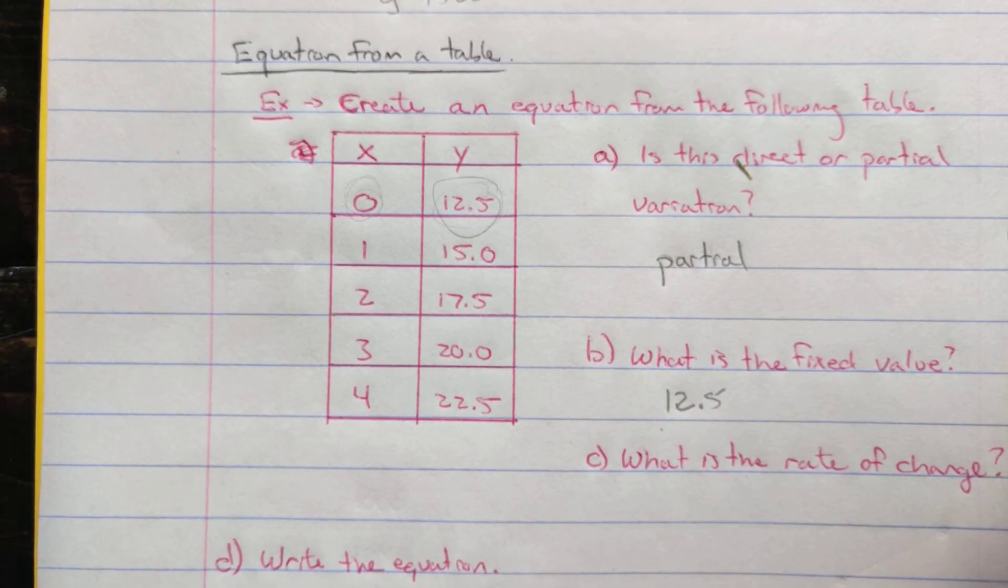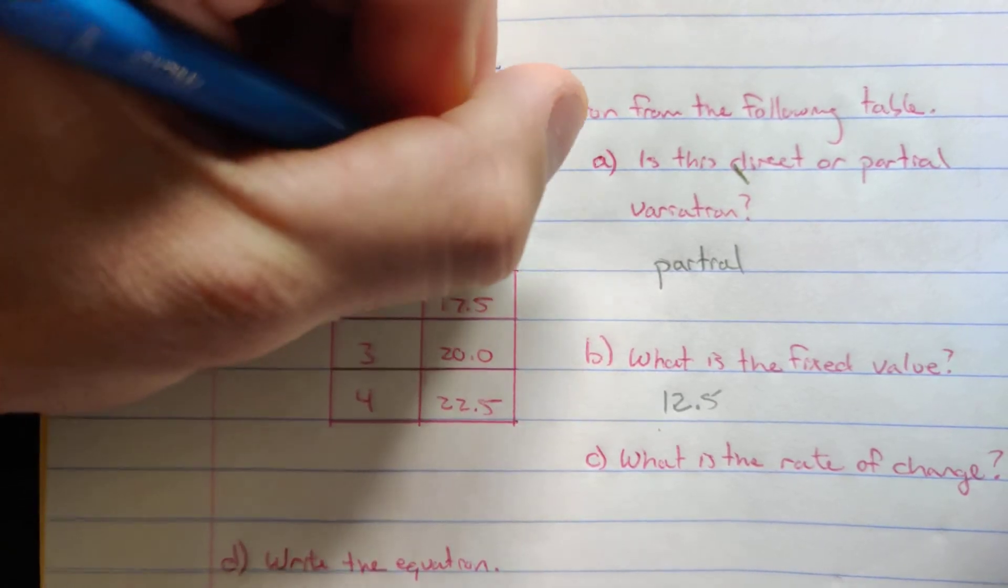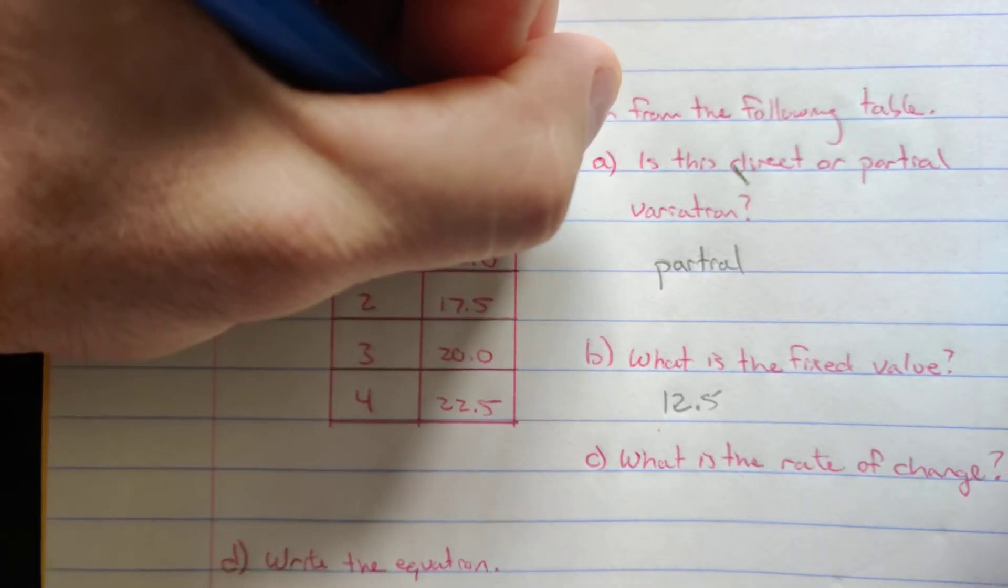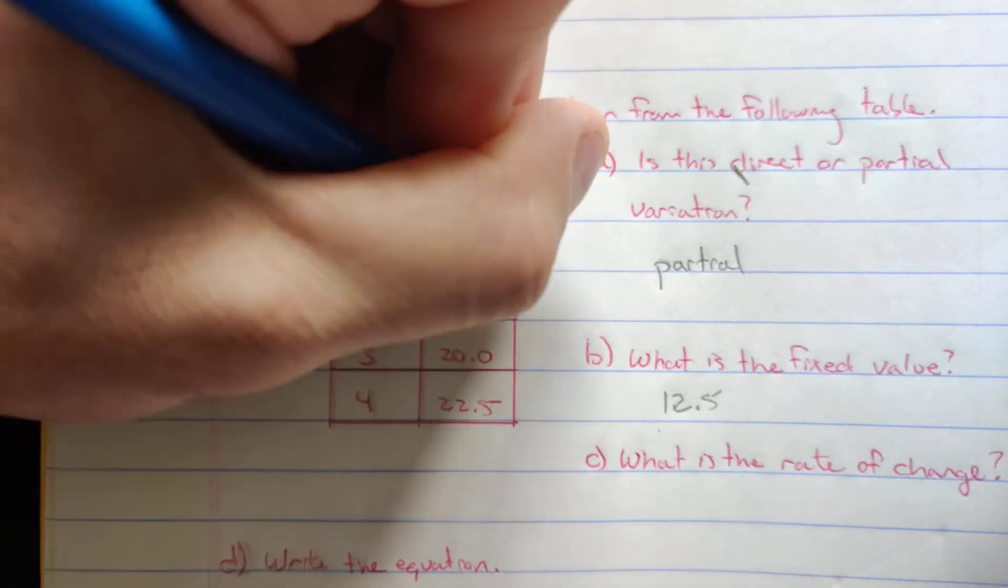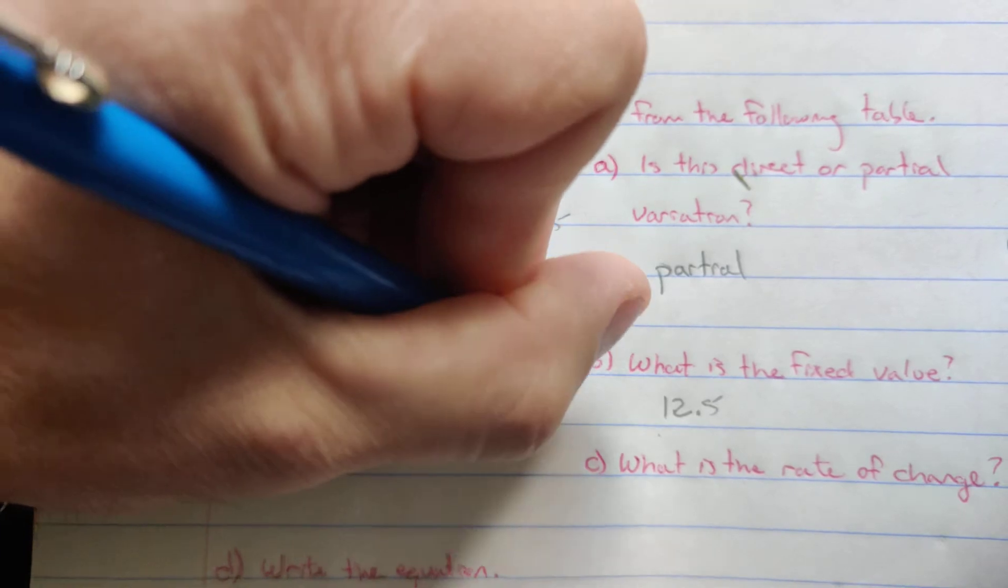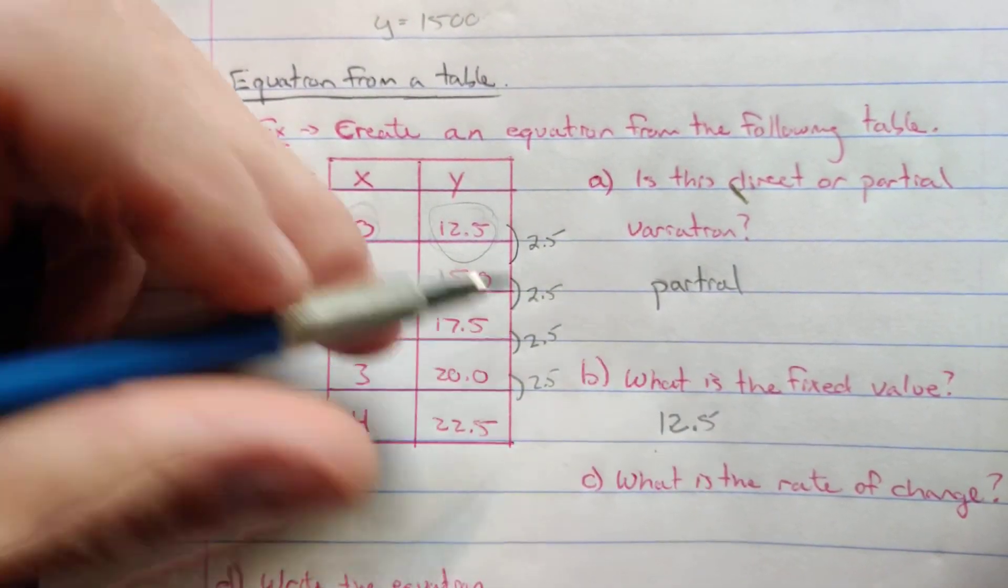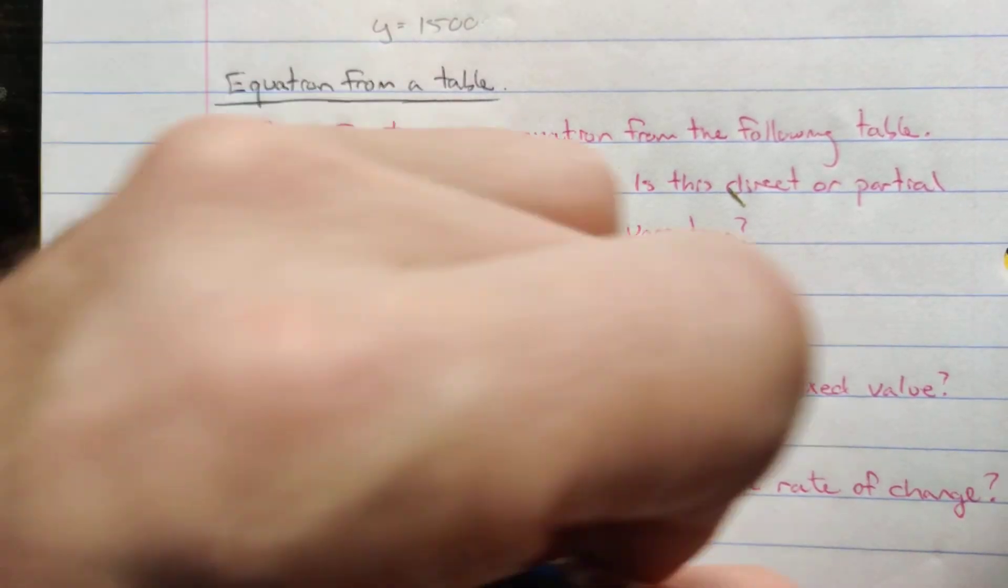And then the rate of change, well, we can look here and see it's going up by 2.5 each time. 22 minus 20 is 2.5. 20 minus 17.5 is 2.5. So it's going up by 2.5. So our rate of change is 2.5.